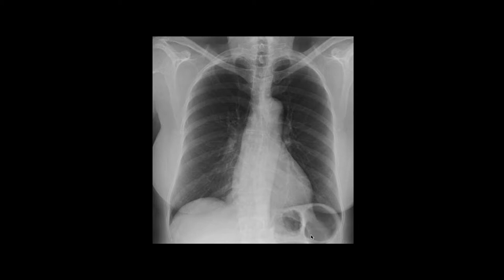Here's an example of a normal chest X-ray. I tend to start looking at the devices — this patient doesn't have any — and then I look at the lungs. One of your best friends when looking at the lungs is symmetry. The lungs are not exactly symmetric, but generally on the X-ray you can just see that the lungs should be equally clear from side to side. I often try to scan them from side to side to look for any nodules, airspace disease, or other asymmetric findings.